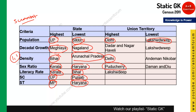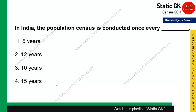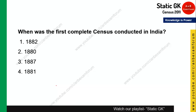Now let's begin the MCQs. Question 1: In India, the population census is conducted every how many years? Since it happens every decade, the answer is 10 years. Question 2: The first complete census was conducted in which year? As seen in the first slide, it was conducted in 1881 by Lord Mayo.